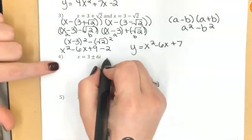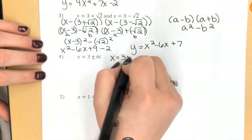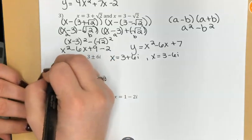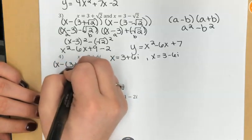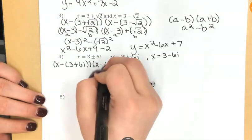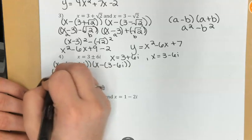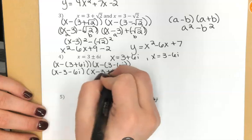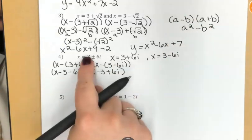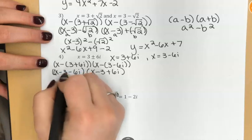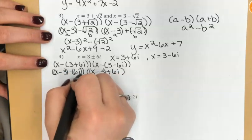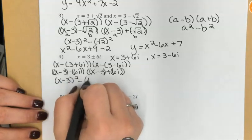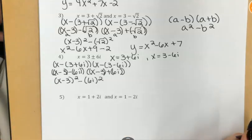Same with imaginary solutions. I can break this out into two separate ones. 3 plus 6i and 3 minus 6i. And I'm going to do my same procedure. Take the difference of each solution or the opposite of each solution, I should say. x minus 3 minus 6i, x minus 3 plus 6i. And again, I've got that difference of squares breakdown here, where I've got x minus 3 as my a and 6i as b. So x minus 3 squared minus 6i squared is an equivalent expression.